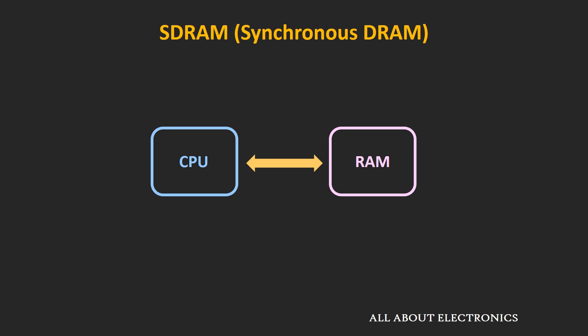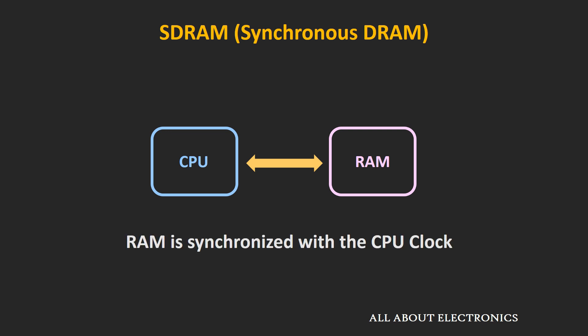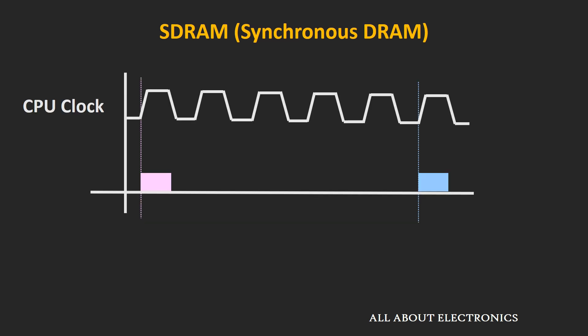That problem was overcome by the next generation, known as synchronous DRAM. In synchronous DRAM, the RAM is synchronized with the CPU clock. The advantage is that the memory controller knows exactly the timing or number of cycles after which data will be available on the bus, so the CPU does not need to wait, and we can increase memory read and write speed.